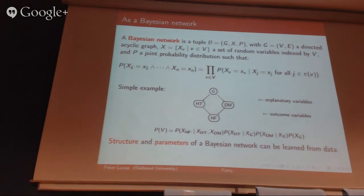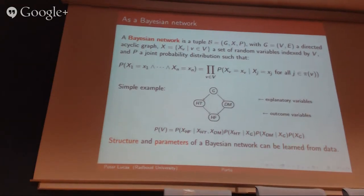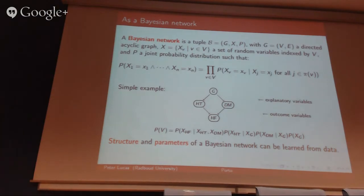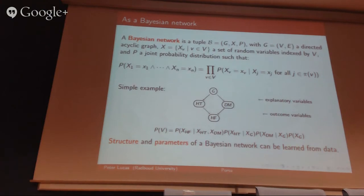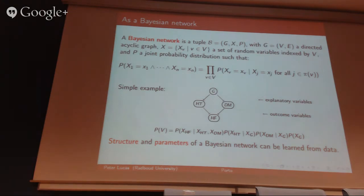You can quite easily model a Bayesian network as a graph. In this case, we try to model two diseases — HT, hypertension, and diabetes mellitus — with age as an important factor, and one outcome variable, heart failure. All variables are in principle uncertain, so you could compute the probability of a particular age given that somebody has heart failure or not. It's a very flexible model allowing you to compute any probability. Despite the fact that arrows indicate direction, you could actually compute any probability of any subset of variables conditioned on any other set.